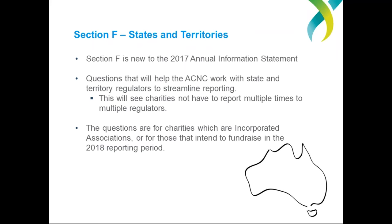Questions in Section F aim to help the ACNC work with state and territory regulators to implement streamlined reporting. One of the objects under the ACNC Act is to promote the reduction of unnecessary regulatory obligations on the Australian not-for-profit sector. The ACNC continues to work with the states and territories to find ways to cut duplicate reporting. We've made significant progress, particularly over the last 12 to 18 months, with further progress likely to be made in time for the 2018 AIS process.